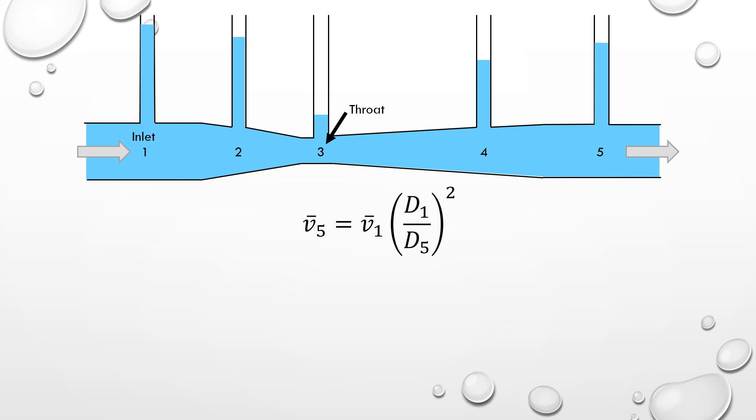We can use a similar approach to relate the fluid velocity at the inlet and the outlet of the venturi. Since the diameter of the venturi, and therefore the cross-sectional area, is equal at the inlet and the outlet, we know that the velocity at these two points must also be equal.